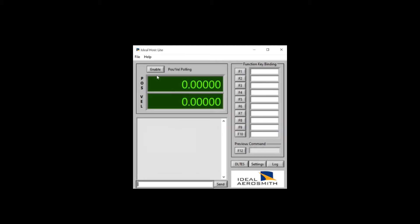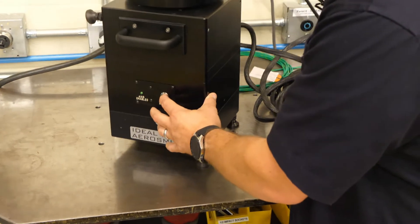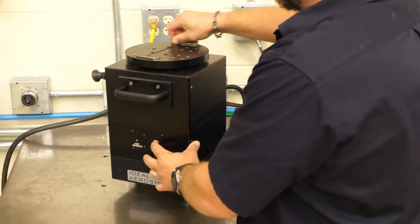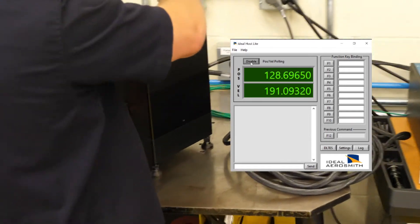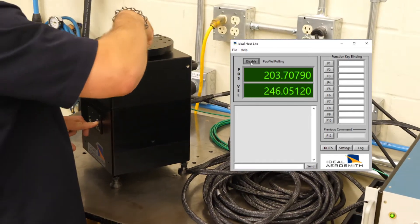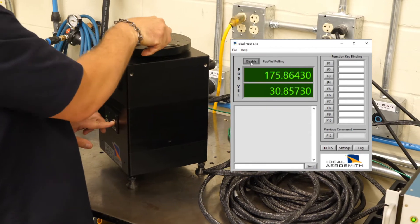And we will enable polling to see that we have some position. To make sure that we have actual feedback, we will go over to the rate table. We'll press the brake release button on the front of the rate table, rotate by hand to see that the brake is released. And we'll watch the display on our host to see that we have position feedback changing as we rotate, which we do.